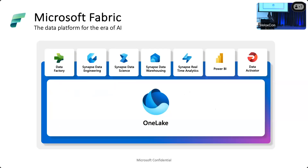Microsoft Fabric is a one-stop data platform which integrates all data offerings — data factory, Power BI, Synapse — all in one place. They all operate on one lake, based on one copy of data. One copy of data and all the data tools at one place makes it a one-stop product for enterprise customers. Our Spark offering is powering the data engineering and data science.